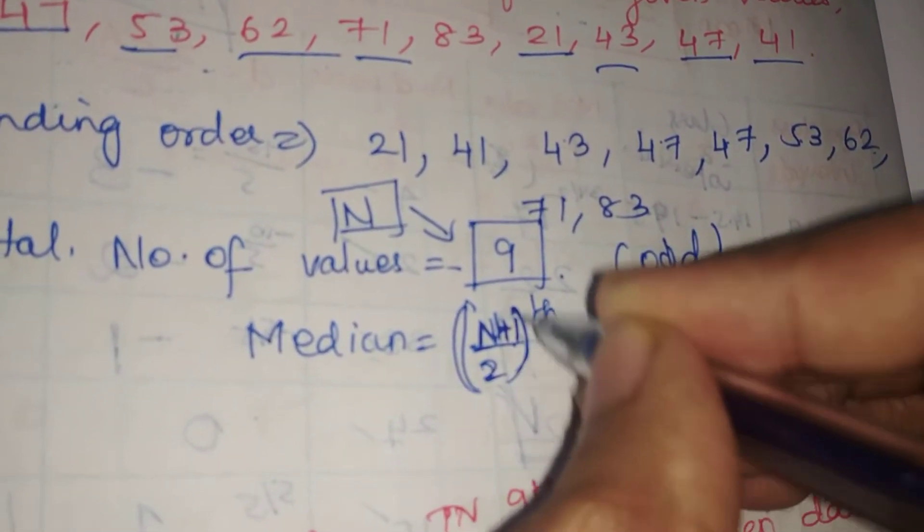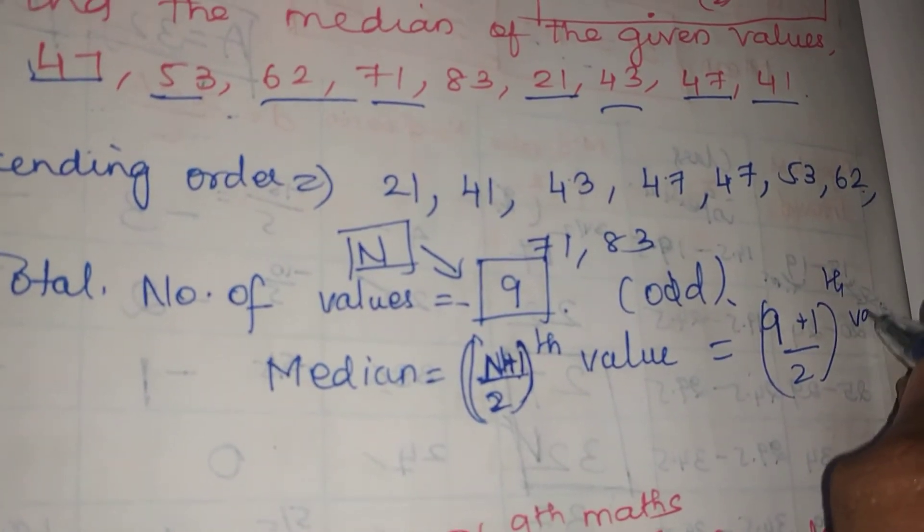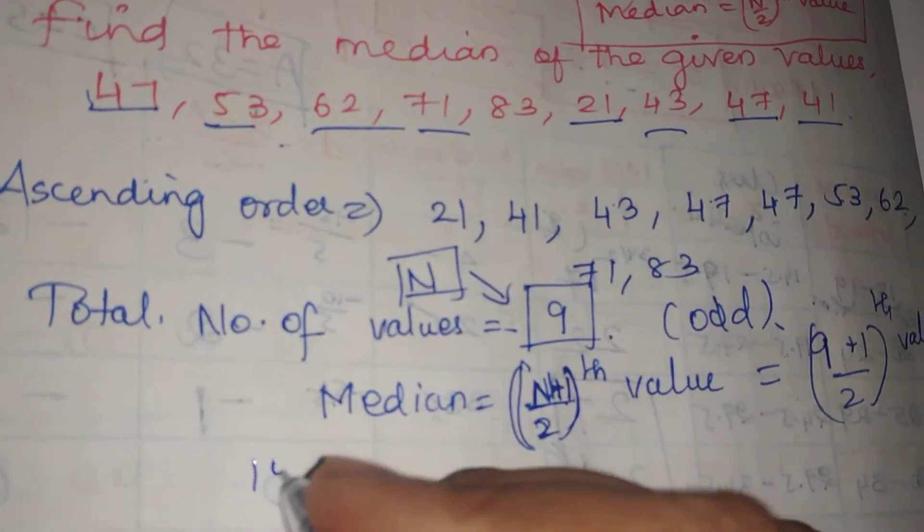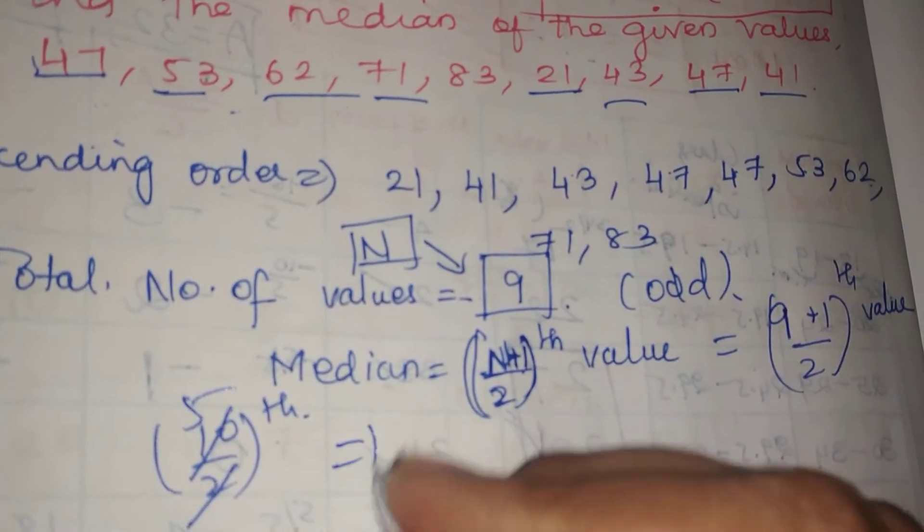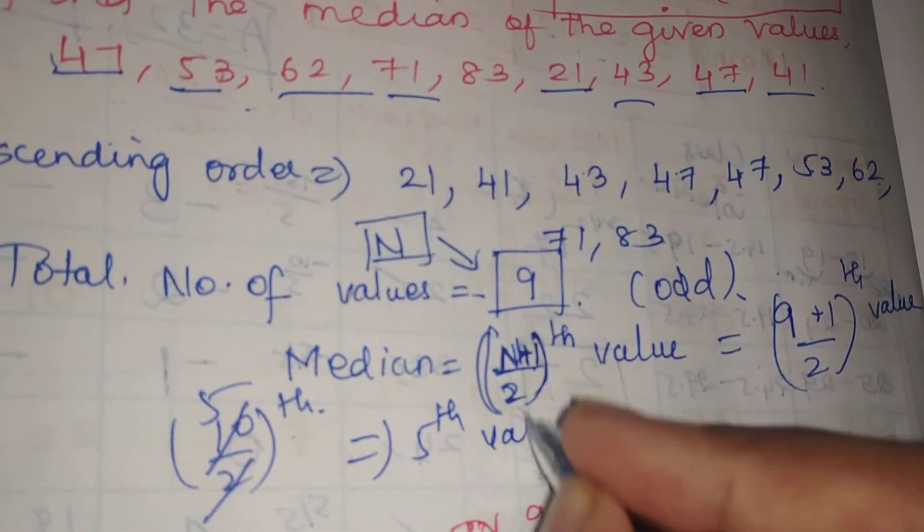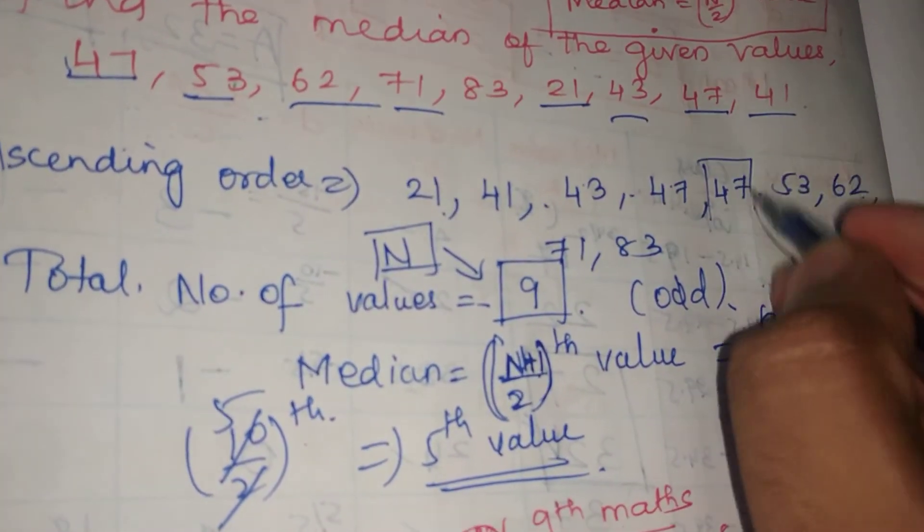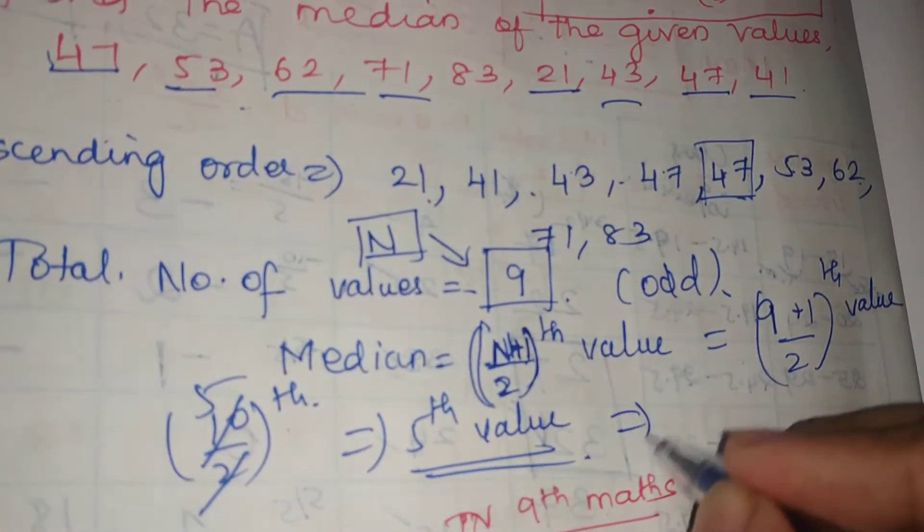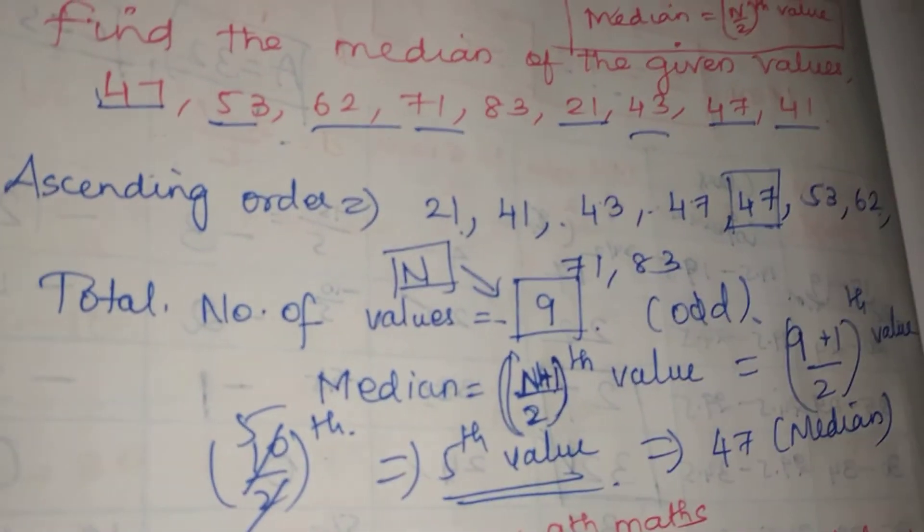So 9 plus 1 divided by 2 equals 10 divided by 2, which equals 5. Therefore, the 5th value in the observation order is the median. The 5th value is 47, so 47 is the median.